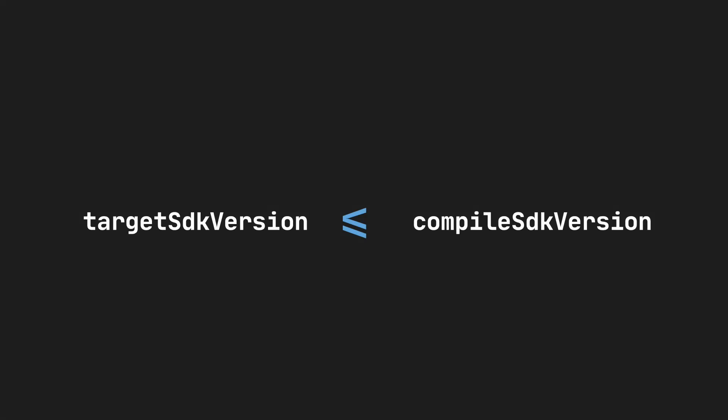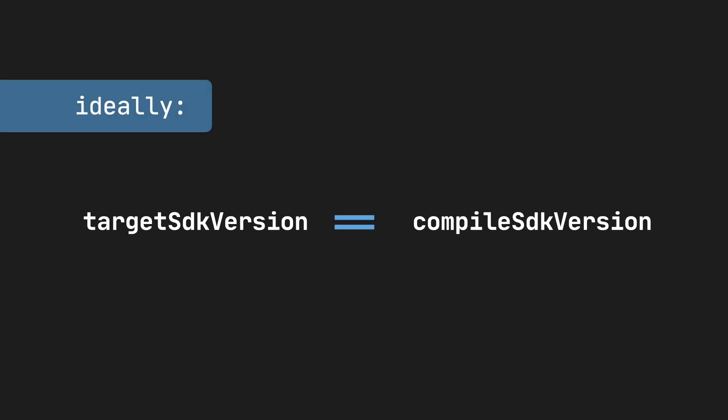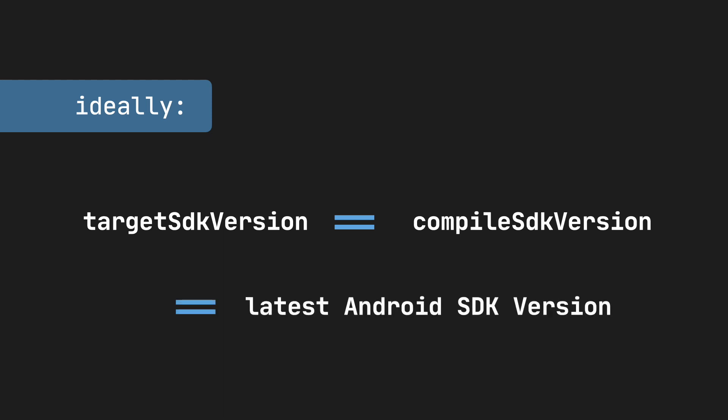As you can see, compileSdkVersion and targetSdkVersion have completely different meanings and purposes. But that does not mean those values are independent. The targetSdkVersion cannot be higher than the compileSdkVersion, simply because we cannot target things we know nothing about during compilation. Ideally, both values should be equal and both point to the latest SDK — but of course only after you test that each change introduced in that version works smoothly in your app.